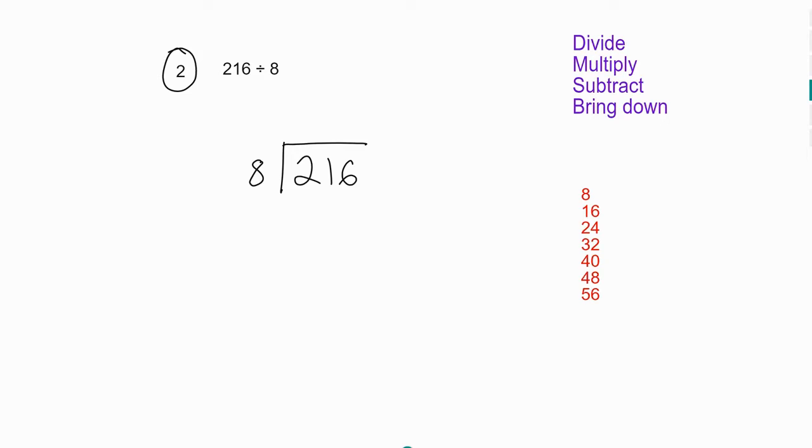So 8 doesn't go into 2, so we put zero. Eight times zero is zero, and two minus zero gives you two. Bring down the next digit, 1. So 8 goes into 21. When I look for the number here which you multiply by 8 that will not go over 21, it will not be 24, so it will be 16. So that's 2. Eight goes into 21 twice.